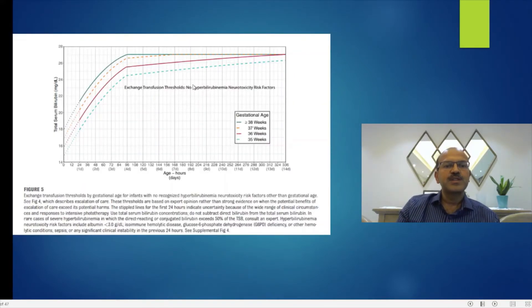These are the exchange transfusion charts. Two different charts, one for babies with no risk factors for neurotoxicity for 35, 36, 37 and more than 38 weeks. All babies more than 38 weeks are clubbed together because there is no evidence that they tolerate the neurotoxicity better. For a term baby 38 weeks, the exchange is around 27 milligrams percent by day 3, day 4.